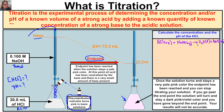The chemical equation is balanced — we have the same number of each atom on both sides. Everything is in a one-to-one mole ratio. Because HCl and NaOH are in a 1:1 mole ratio, we can use the formula MV = MV, where M is molarity and V is volume — the left side representing the acid and the right side representing the base.